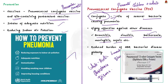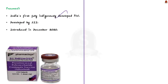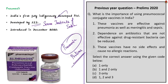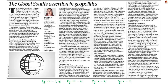Pneumococcal is India's first fully indigenously developed pneumococcal conjugate vaccine. It was developed by the Serum Institute of India and was introduced in December 2020. These science-related topics are very important for your preliminary examination, so make a note of all the facts provided in this discussion and use them for your prelims preparation. With these key points in mind, let's move on to the next news article discussion.